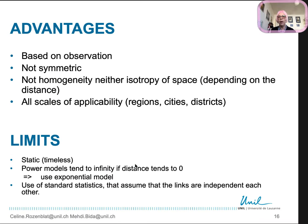Finally, the advantage of the gravitation model is that it is based on the observation that we can measure. It is not necessarily symmetric as the Newton model is, but the very old models were symmetric. They can easily consider that space is not homogeneous and isotrope depending on the distance we consider. It can be distance by car, time, by plane, and so on. All the scales of applicability are possible from regions, cities, districts, to countries, so it works both at local and global scales.